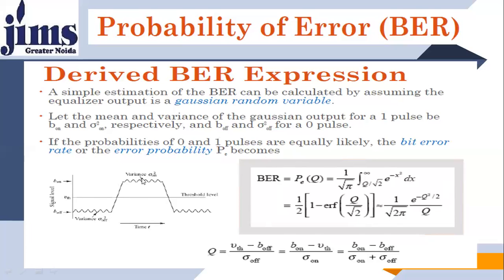Variance sigma-on squared and B-on are applicable above the threshold, while sigma-off squared and B-off are applicable below the threshold. Between B-off and B-on there is the threshold voltage V. On the basis of this threshold line, the receiver decides whether to declare 1 or 0.